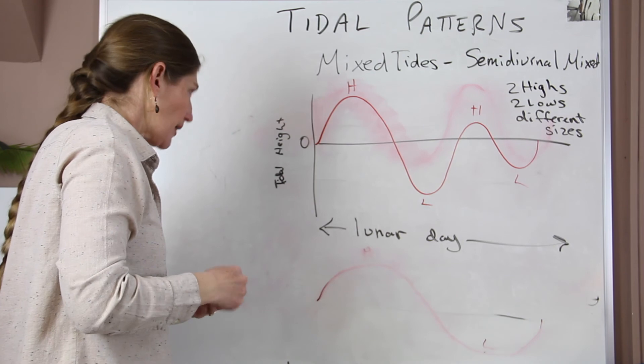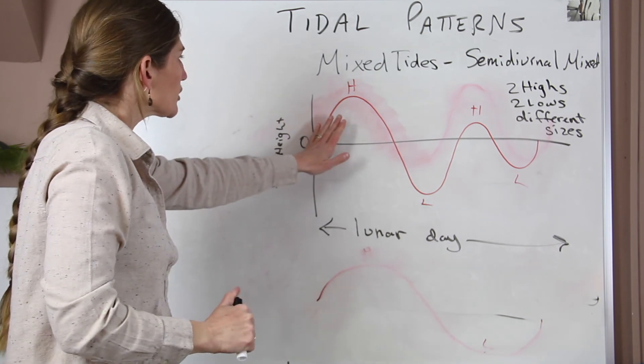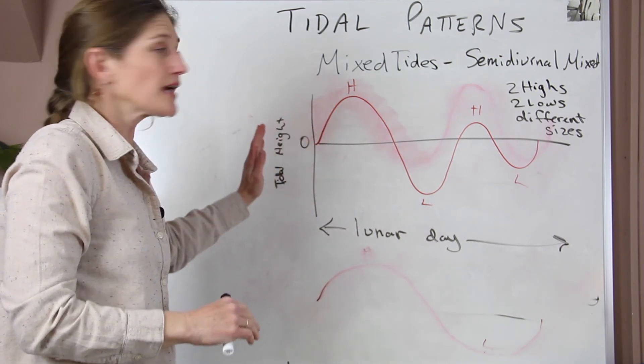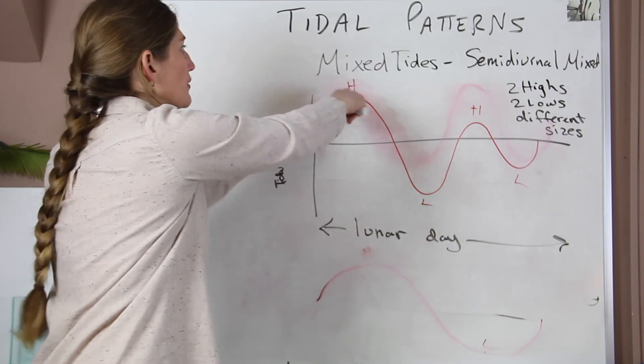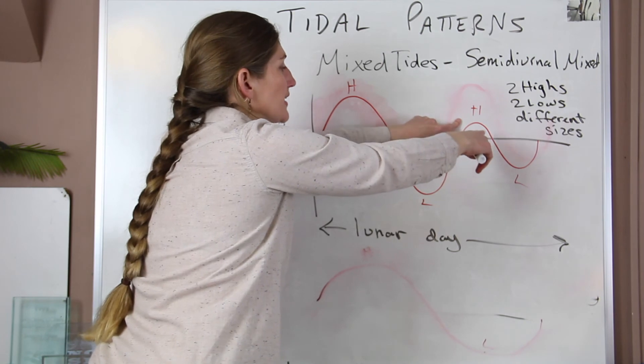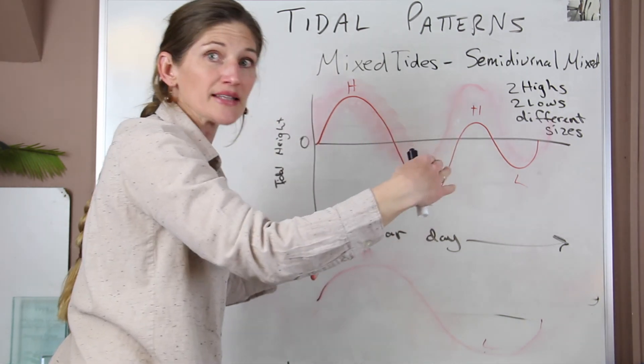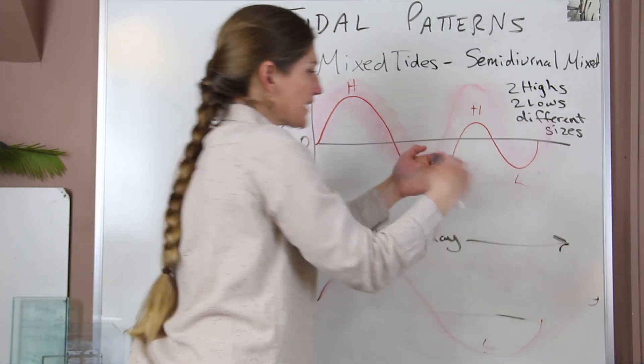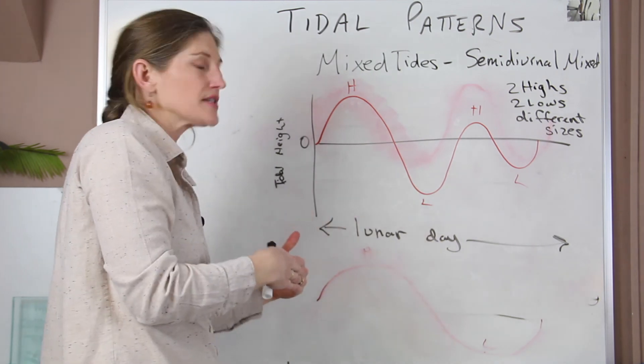Alright, so if you were to be at a location that it would experience this, one of the high tides when it comes in will come up much farther on the shore, the water will go very far out. And then on the second rise for that second high tide it won't come as high up on the beach, and then the second low won't go out as far either.